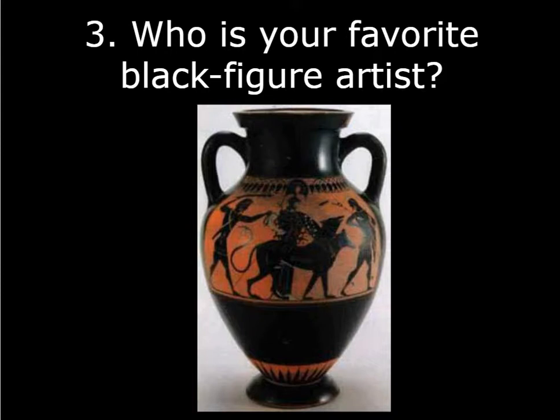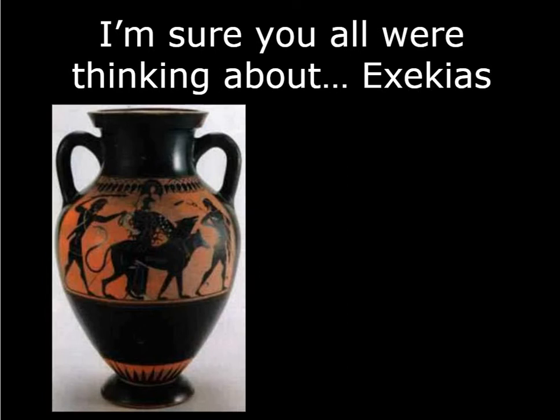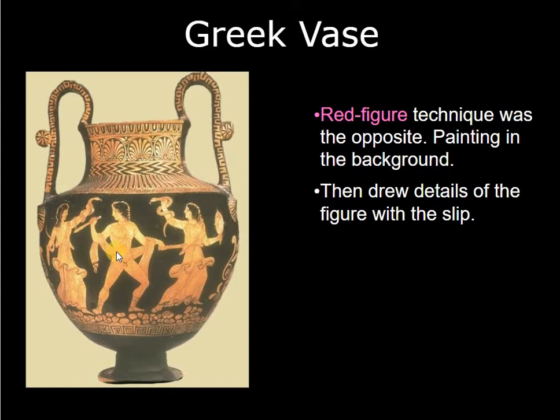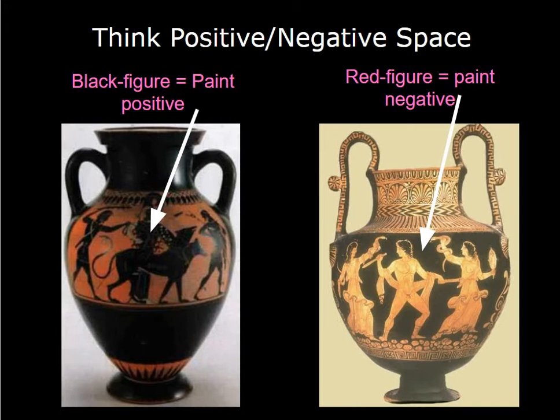Do you know who your favorite black figure artist is? How about Euthyclius? He's our favorite because he didn't just make the vases, he painted the vases. Back in the day, sometimes you'd have one artist make the vase and then another guy paint it. But this guy was so cool, he did both. Red figure is simply the opposite of black figure. The figures are in red and the background's black. That's how you can tell the difference. Black figure, you're painting a positive. Red figure, you're painting the black negative.